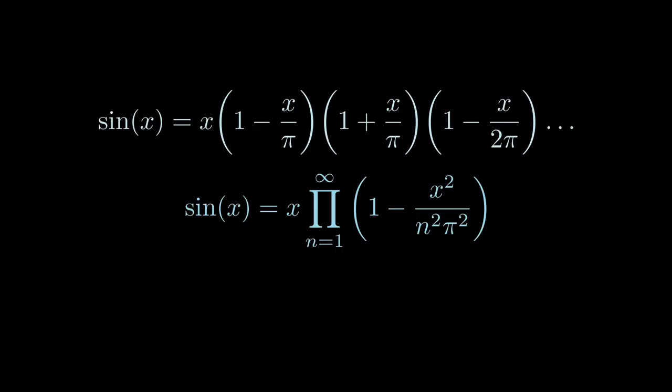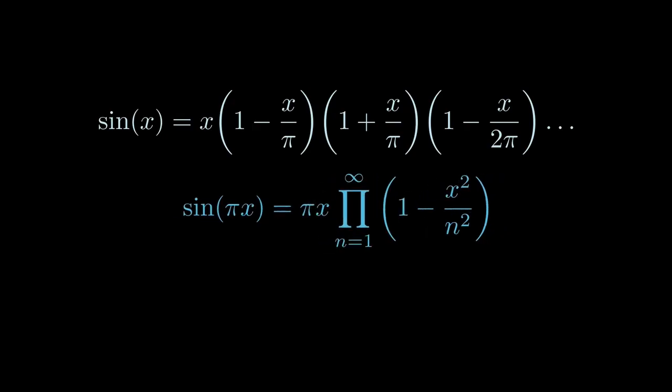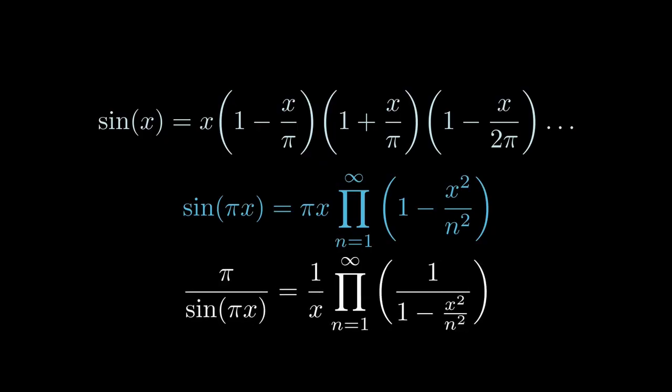This must have started looking somewhat like the thing we want to evaluate. But we aren't quite there yet. Plug pi times x into this equation. And you get pi times x times the infinite product from n equals 1 of 1 minus pi squared times x squared over pi squared times n squared. The pi's cancel out and you get this. Now, just take the reciprocal of the equation and multiply both sides by pi. There, the right-hand side thing is exactly what we were looking for.